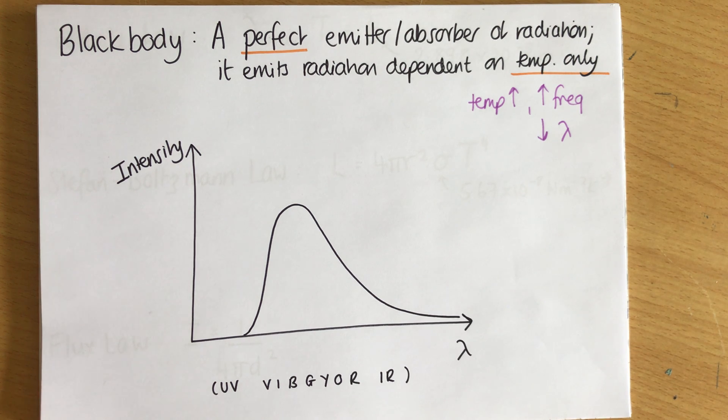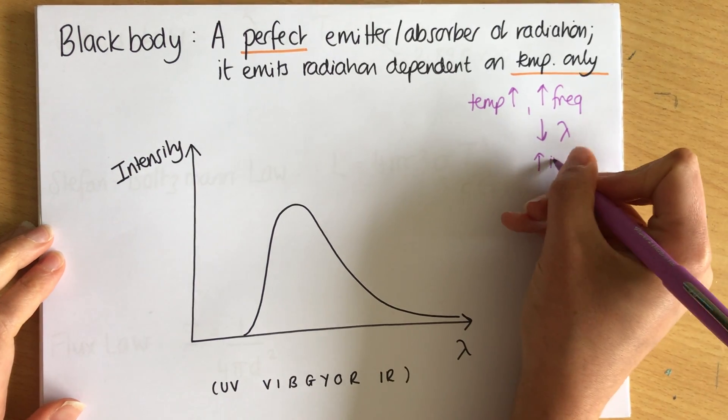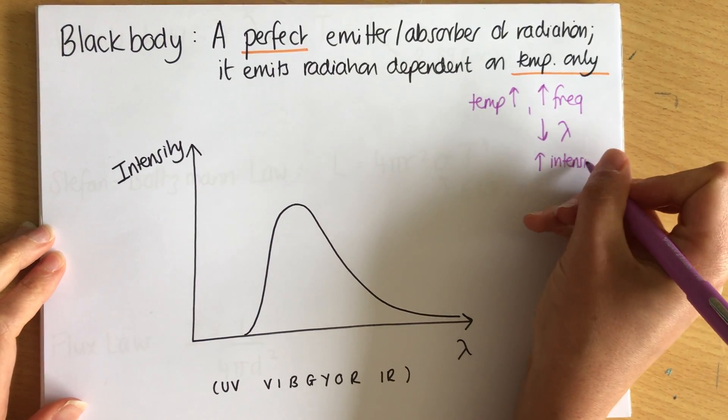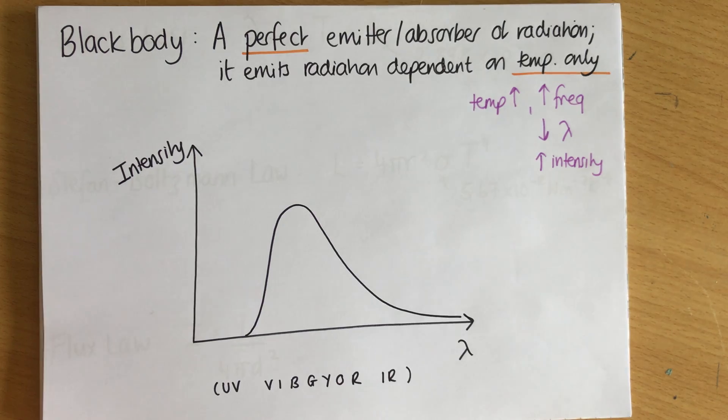So the hotter the object the lower the wavelength of light that it's emitting. And we also increase the intensity of the radiation which makes sense. Something that's hotter gives out more energy per second.